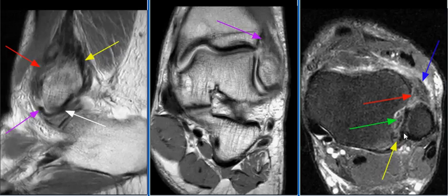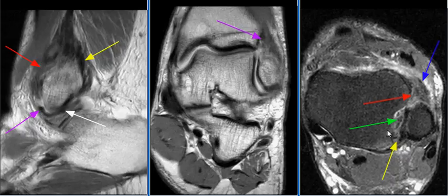The posterior syndesmotic ligament also demonstrates scarring, as seen on this image with the yellow arrow. There is synovitis in the central syndesmosis, as seen on this image with the green arrow.